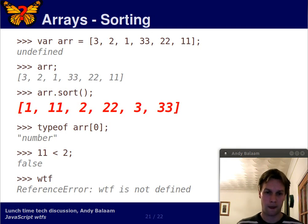For a reason I cannot fathom, the sort function on an array always converts its arguments, or rather converts the arguments, the elements of the array to string before it compares them.